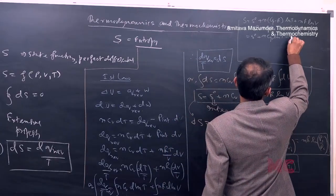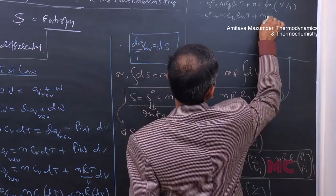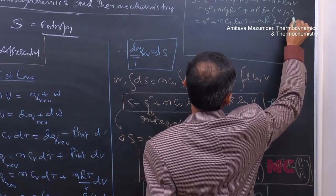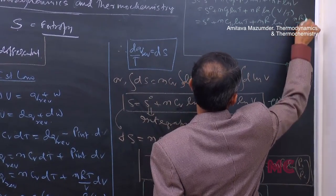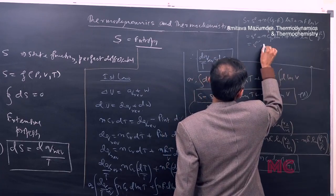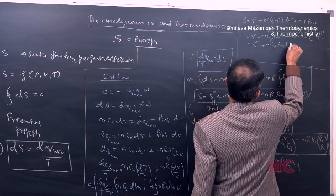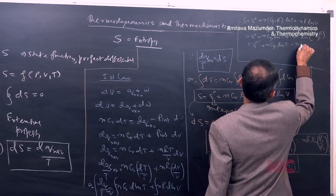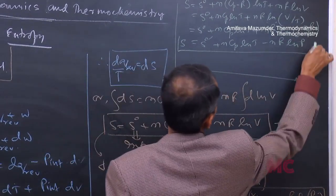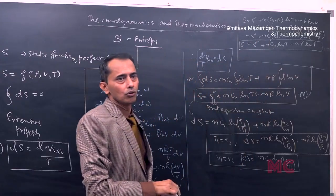Since nR is a constant, we can write S₀′ plus nCₚ ln(T) minus nR ln(P), where S₀′ is a new integration constant. This is the basic entropy equation obtained by incorporating Cₚ.